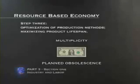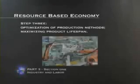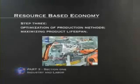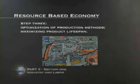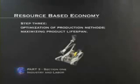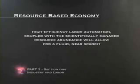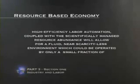In a saner world, we would make things that last. The optimization of production methods is about using the most powerful materials and methods while outputting the most long-lasting and effective products. Furthermore, human labor is not only currently being replaced by machines because it is more cost-effective in the profit system — machine labor is actually much better than human labor, and output statistics have shown this continually. A machine does not get tired and it is always more accurate and consistent than a human mechanically. High-efficiency labor automation coupled with scientifically managed resource abundance will allow for a fluid, near-scarcity-less environment which could be operated by only a small fraction of the population.